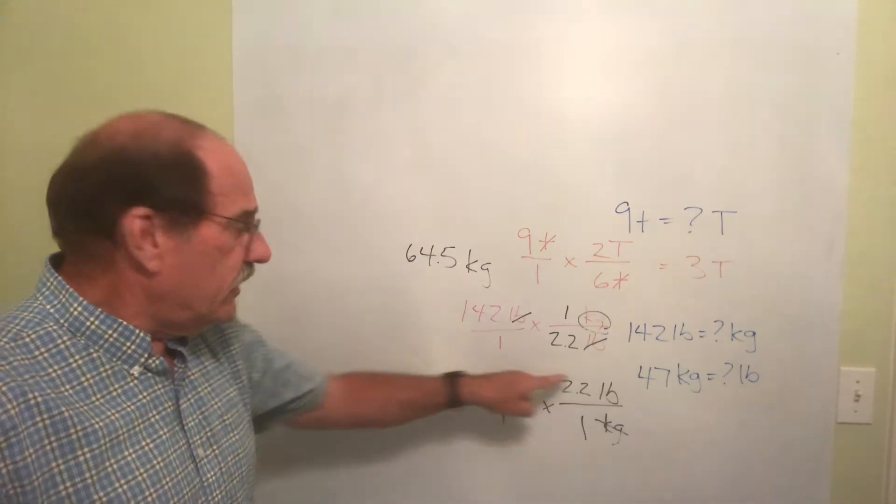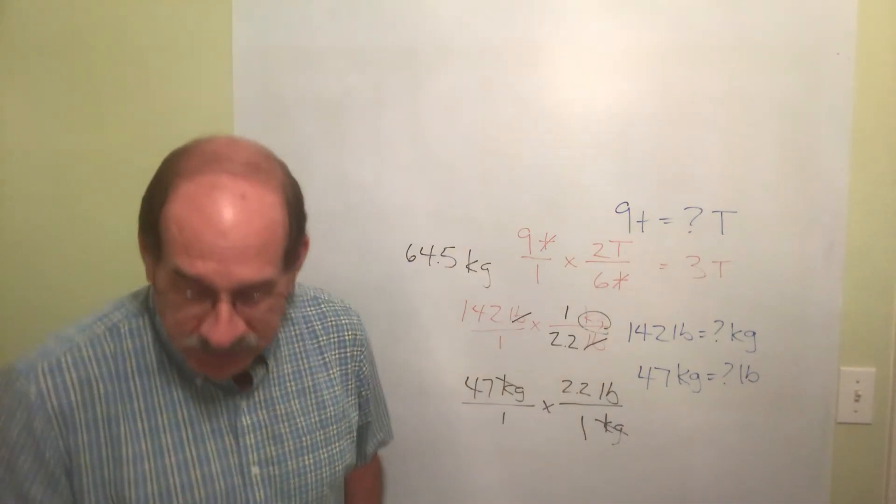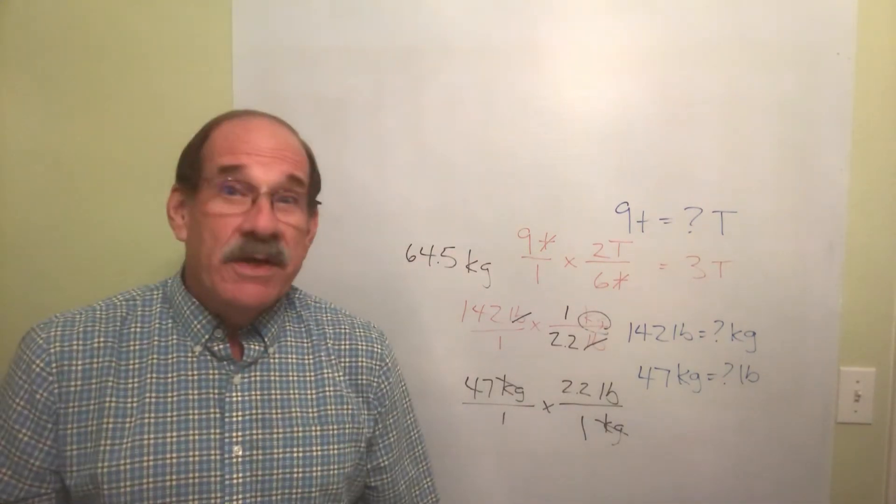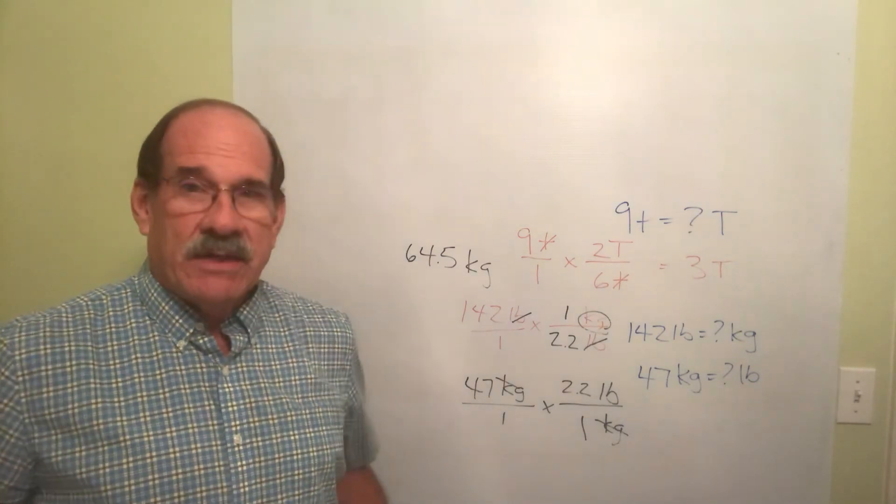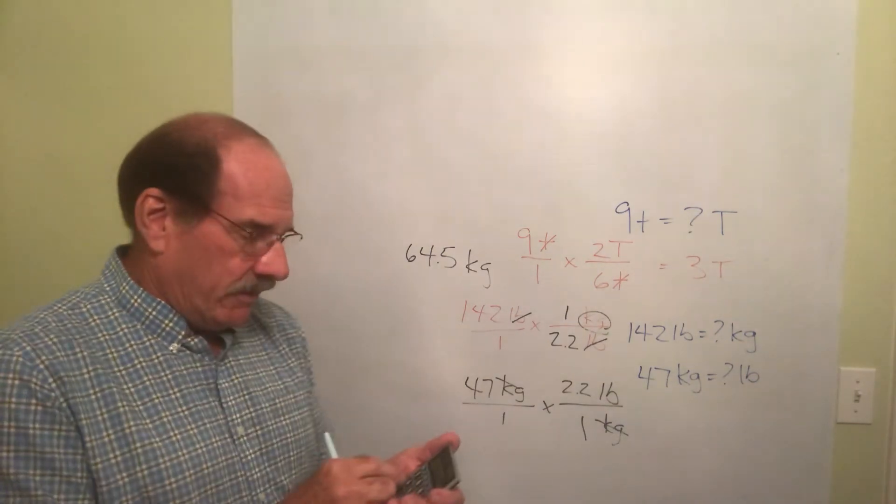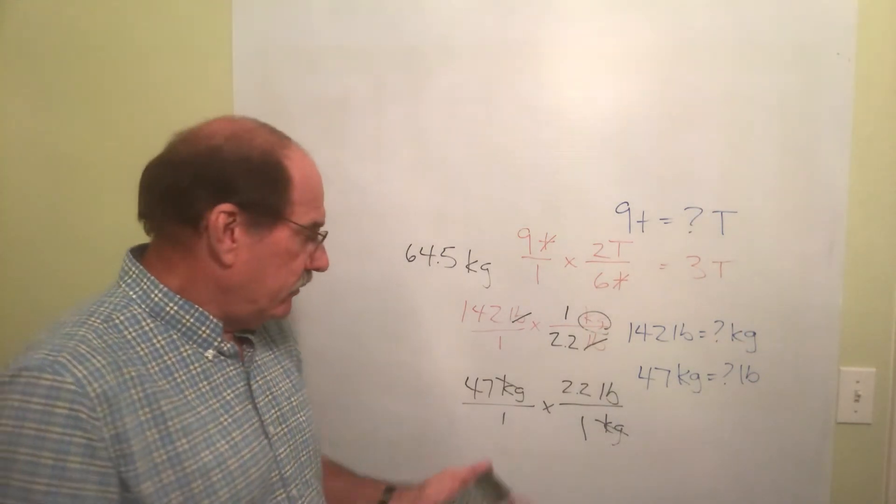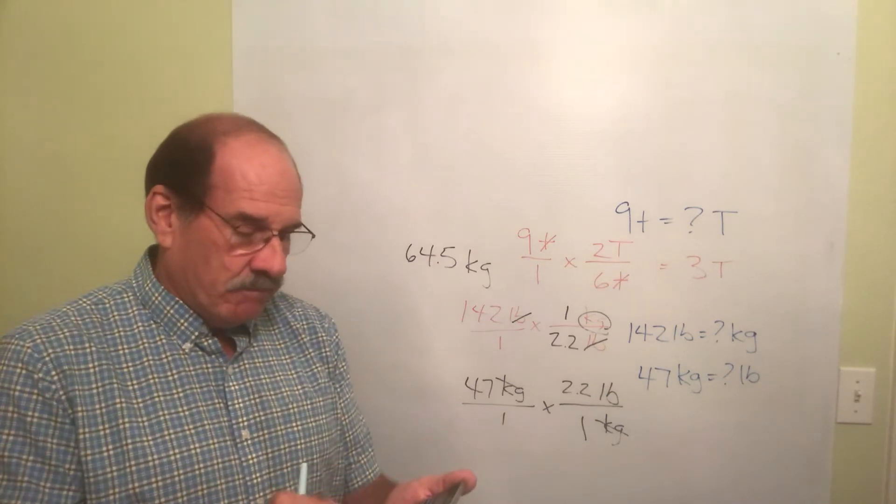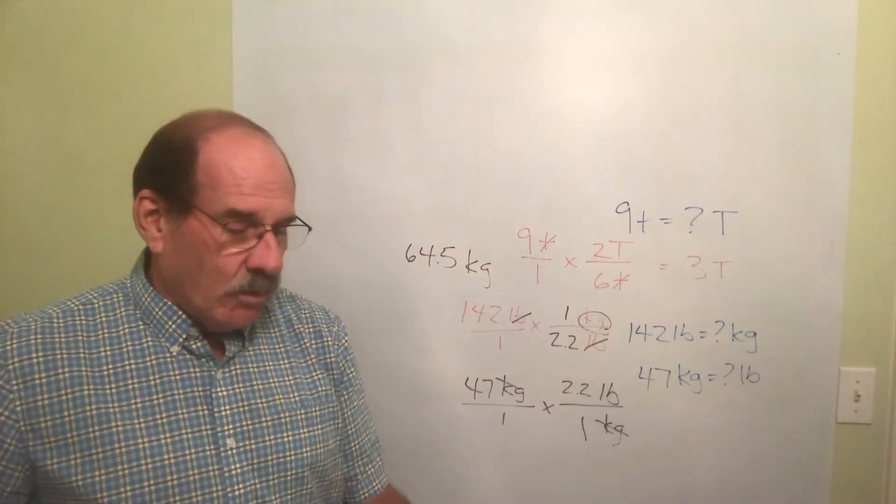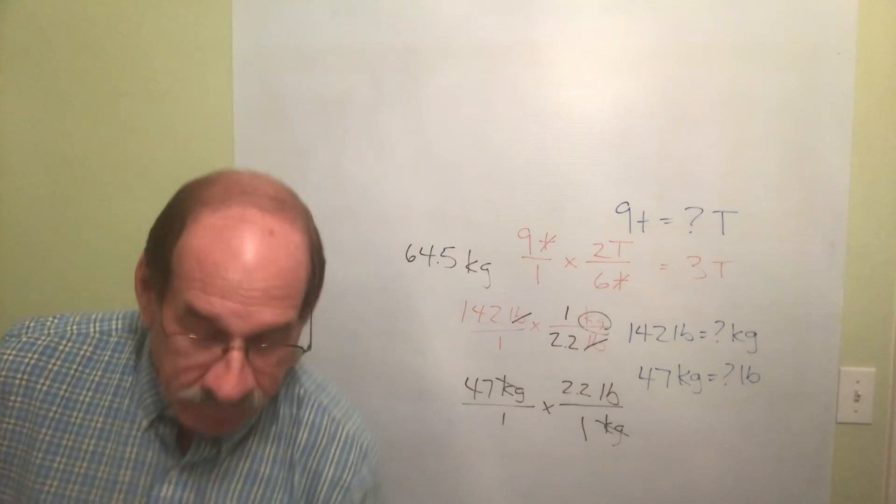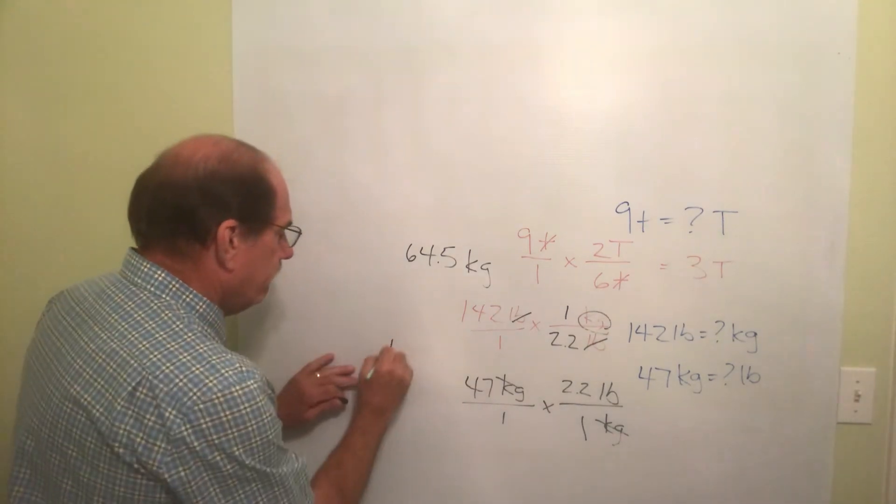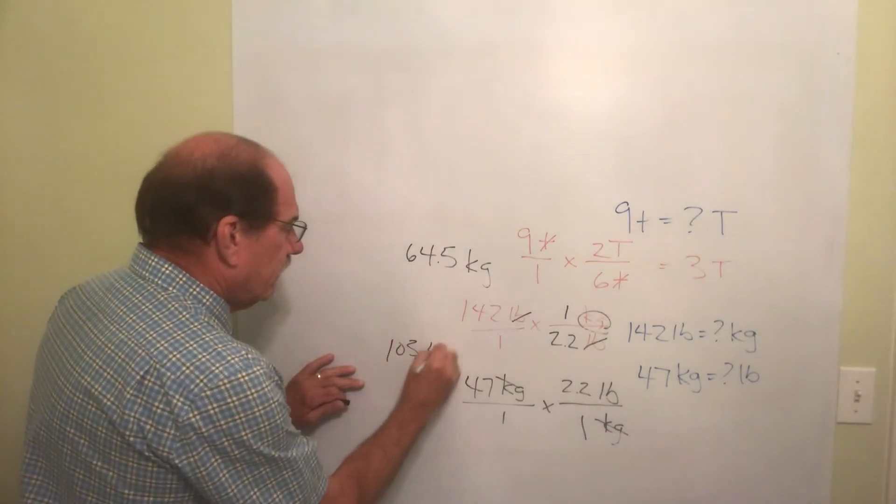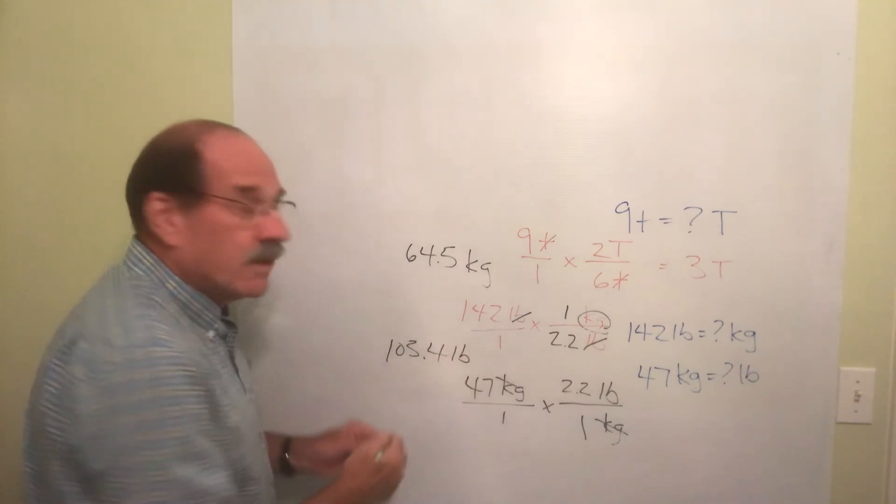Since both of these non-one numbers are on top, what do I do with them? Yes, I multiply it. So 47 times 2.2 equals 103.4. 103.4 pounds.